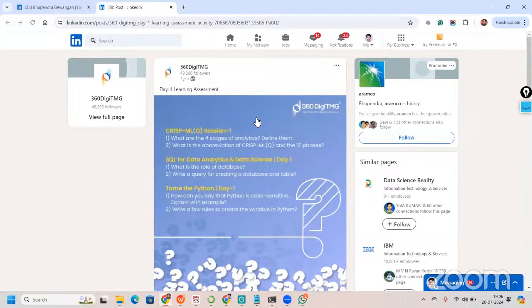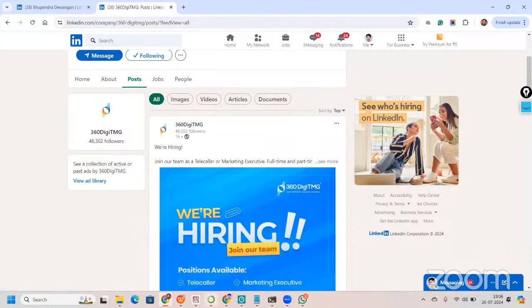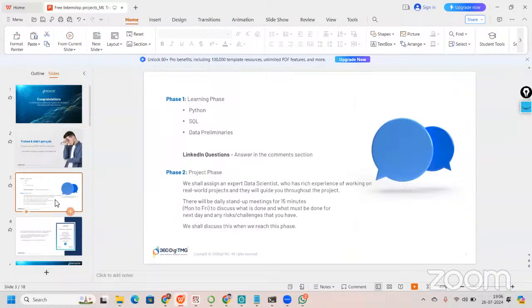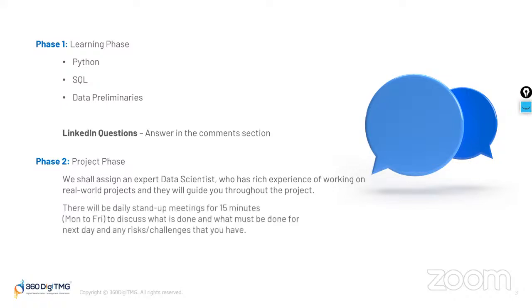The assessment and first phase will run for 20 days. After that, there will be the Project Phase. You can also follow us on LinkedIn. In the project phase, we shall assign an expert data scientist with rich experience in real-world projects, and they will guide you throughout. Every single day, Monday to Friday, you will have a 15-minute daily stand-up meeting to discuss what is done and what must be done for the next day.